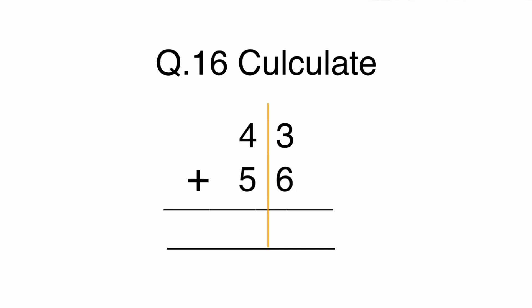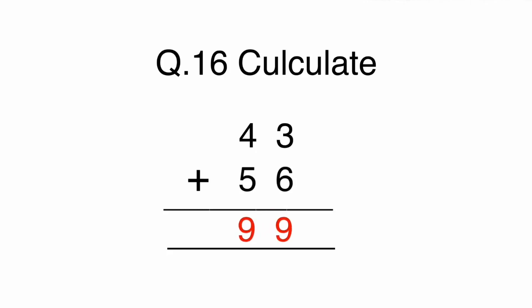First, we must calculate the units. 3 plus 6 equals 9. Now, let's add the tens column. 40 plus 50 equals 90. The answer is 99.